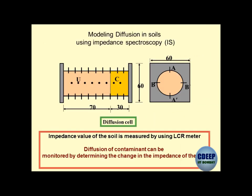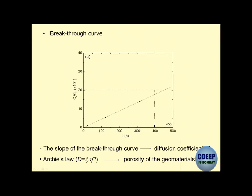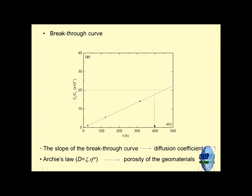I had also discussed unsaturated soils and how contaminant transport takes place in unsaturated soils. We were discussing the breakthrough curve, which is the normalized concentration with respect to time. The slope of this curve gives you the diffusion coefficient. Whenever you perform diffusion experiments, the basic intention is to get normalized concentration with respect to time, and the slope gives you the diffusion coefficient.